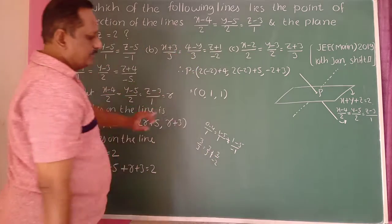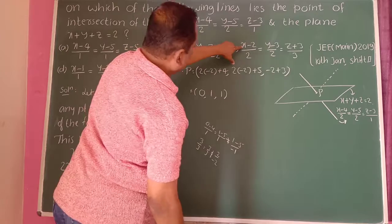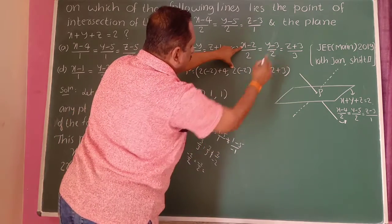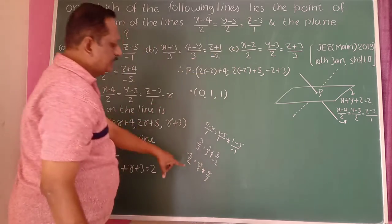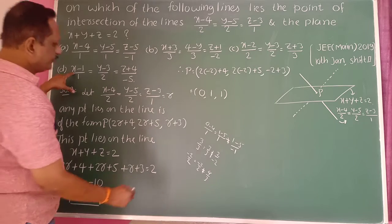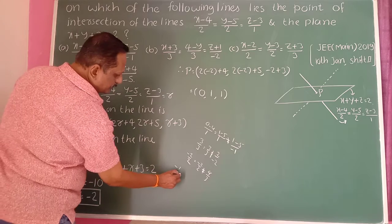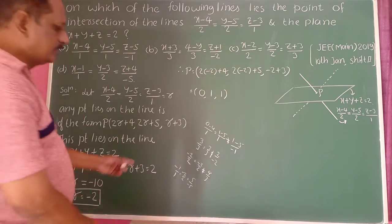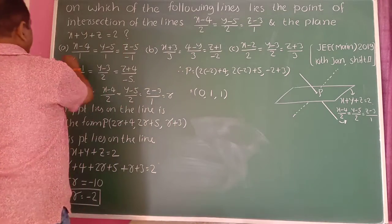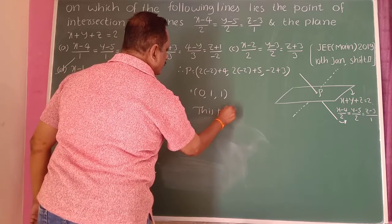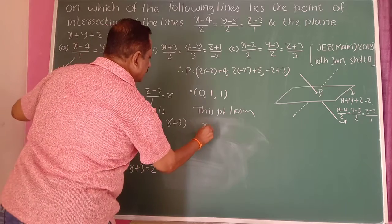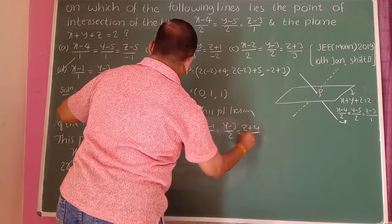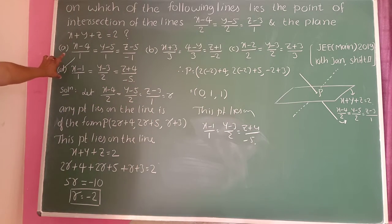Checking the options by substituting point (0, 1, 1): the first and second options do not satisfy. For the third option, the ratios are not equal. For the fourth option, substituting into x minus 1 divided by 1 equals y minus 3 divided by 3 equals z plus 4 divided by minus 5, the ratios are equal. Therefore, this point lies on the fourth line, so the fourth option is correct.